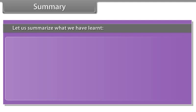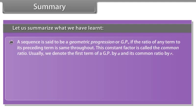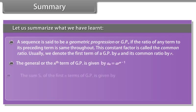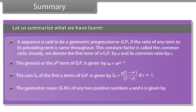A sequence is said to be a geometric progression or GP if the ratio of any term to its preceding term is the same throughout. This constant factor is called the common ratio. We denote the first term of a GP by A and its common ratio by R. The general or nth term of GP is Aₙ = A×R^(n-1). The sum Sₙ of the first n terms of GP is Sₙ = A×(1-Rⁿ)/(1-R). The geometric mean of any two positive numbers A and B is G = √(AB), meaning the sequence A, G, B is a GP.